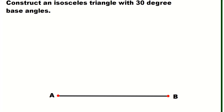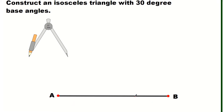Hello everyone, this is Teacher John. For this video we are going to construct an isosceles triangle with 30-degree base angles. Isosceles triangle meaning two base angles are equal in measure. I have here segment AB.